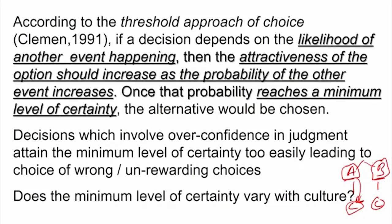Once that probability reaches a minimum level of certainty, the alternative will be chosen — this is the threshold approach of choice. For instance, if manufacturer A confirms that a minimum charge will be taken and accessory C will be given, while manufacturer B says nothing about C, you will choose product A. This is threshold decision making.